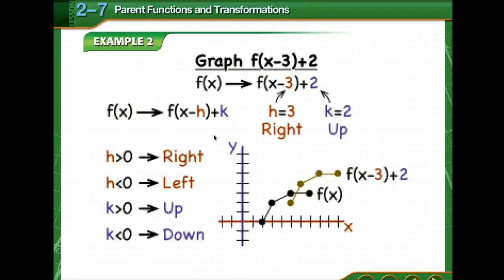Now we're going to talk a little bit about transformations. Transformations of a parent graph may appear in a different location, flip over an axis, or appear to have been stretched or compressed. The transformed graph may resemble the parent graph, or it may not even resemble it by the time we finish. A translation will move the figure up, down, left, or right.